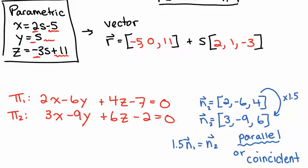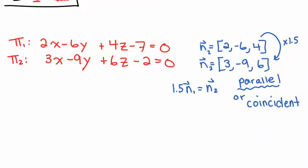So, they could be parallel and not intersect each other, or they could be coincident and intersect each other infinite number of times. So, to figure out which it is, we could try solving our equations, or you could look at your constant terms and see if they have the same relationship. Can we multiply the first one by 1.5 to equal 2? No, I don't think so. So, since our constants don't have the same relationship as our normals, I'm going to say that they're parallel, there's no solution, they're separate planes.